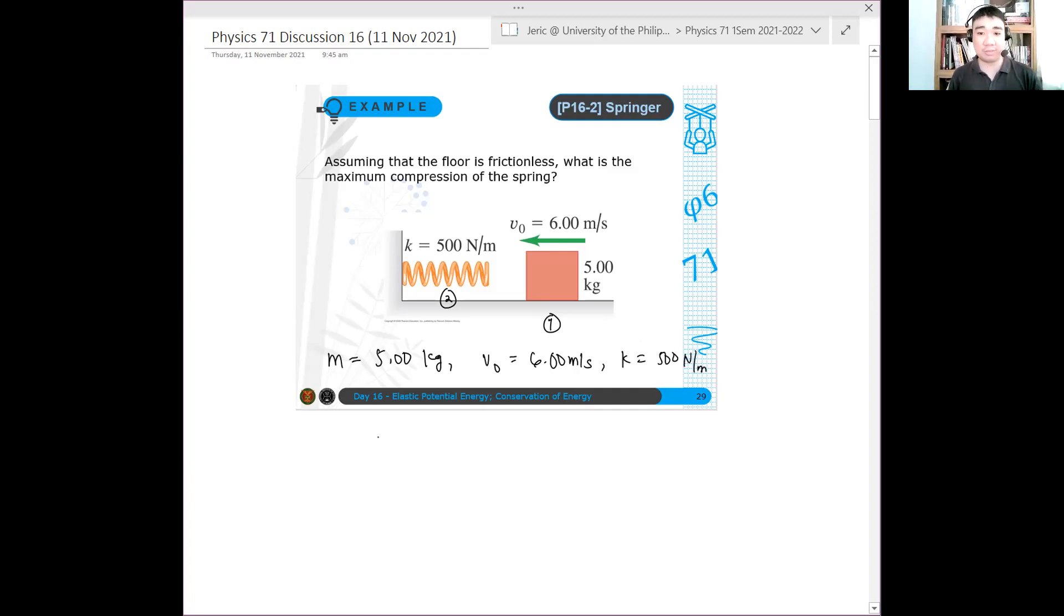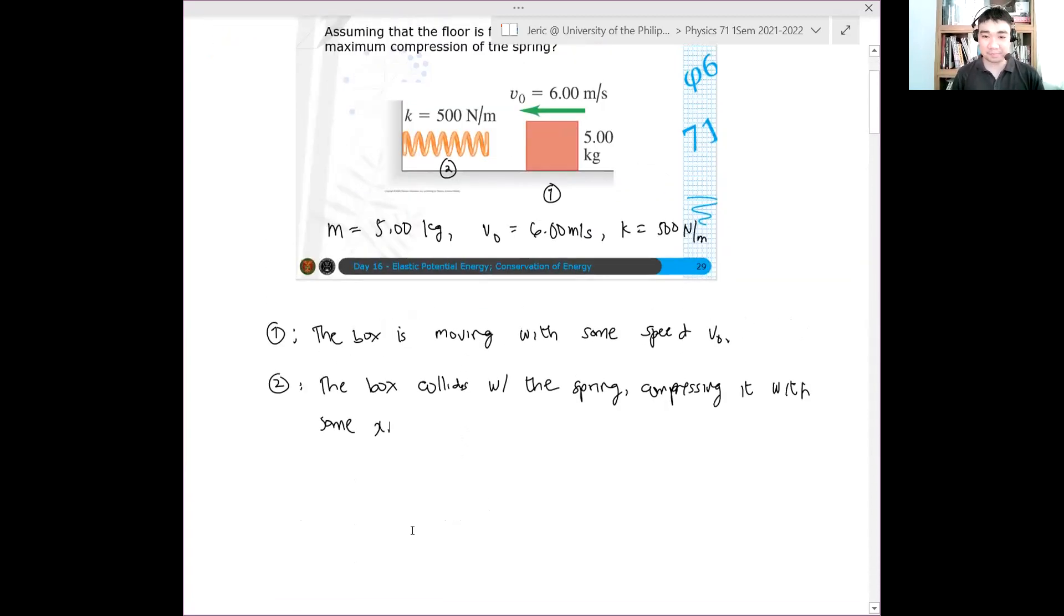Now we can define two states, one and two. So the first state is that the box is moving with some speed, and then the second state is that the box collides with the spring, compressing it from x.